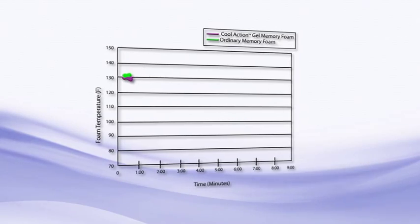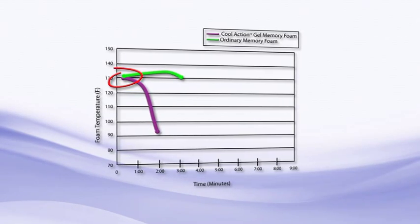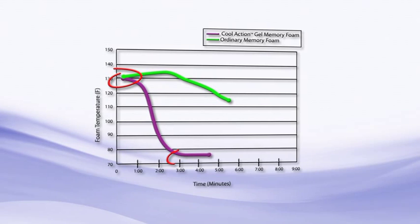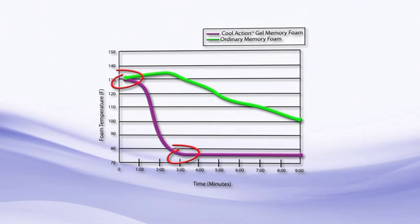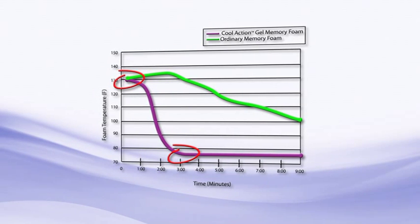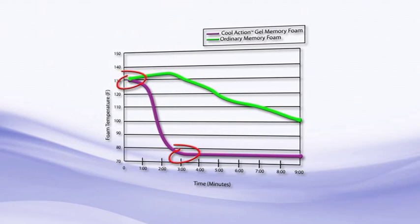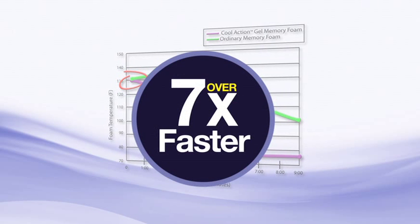To prove this, we heated both kinds of memory foam to a high temperature. While our Cool Action Gel Memory Foam cooled in a matter of minutes, the temperature of ordinary memory foam cooled significantly slower. In fact, our material cools to room temperature over seven times faster than ordinary foam.